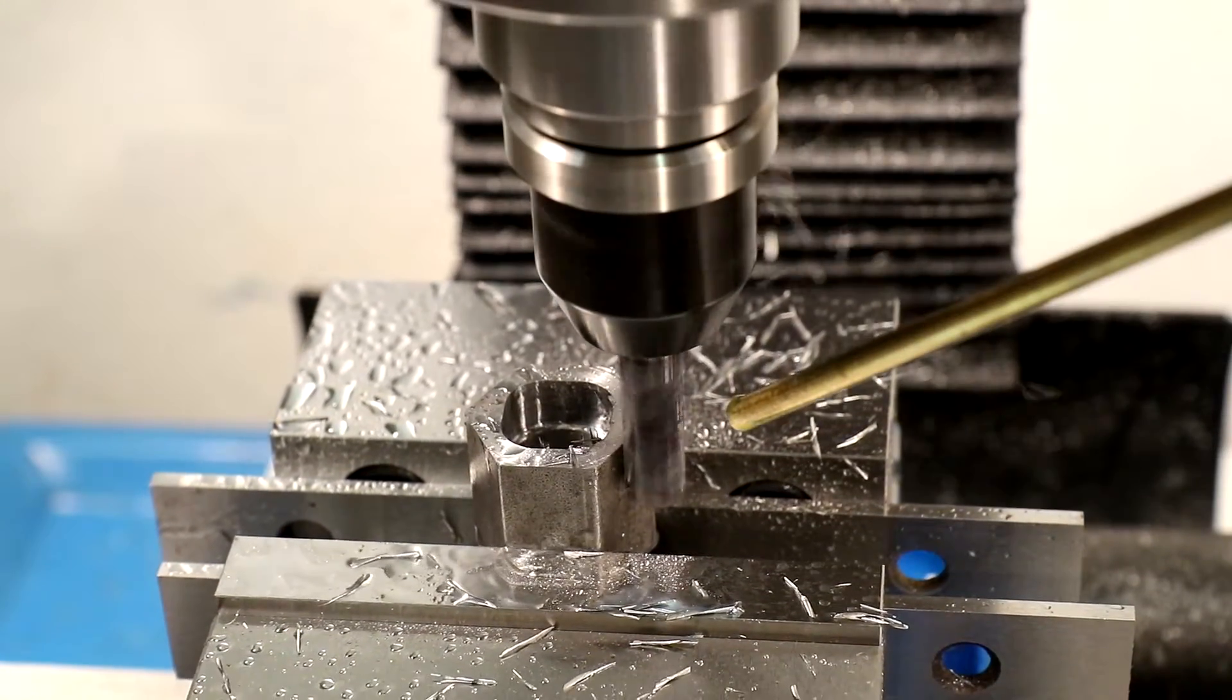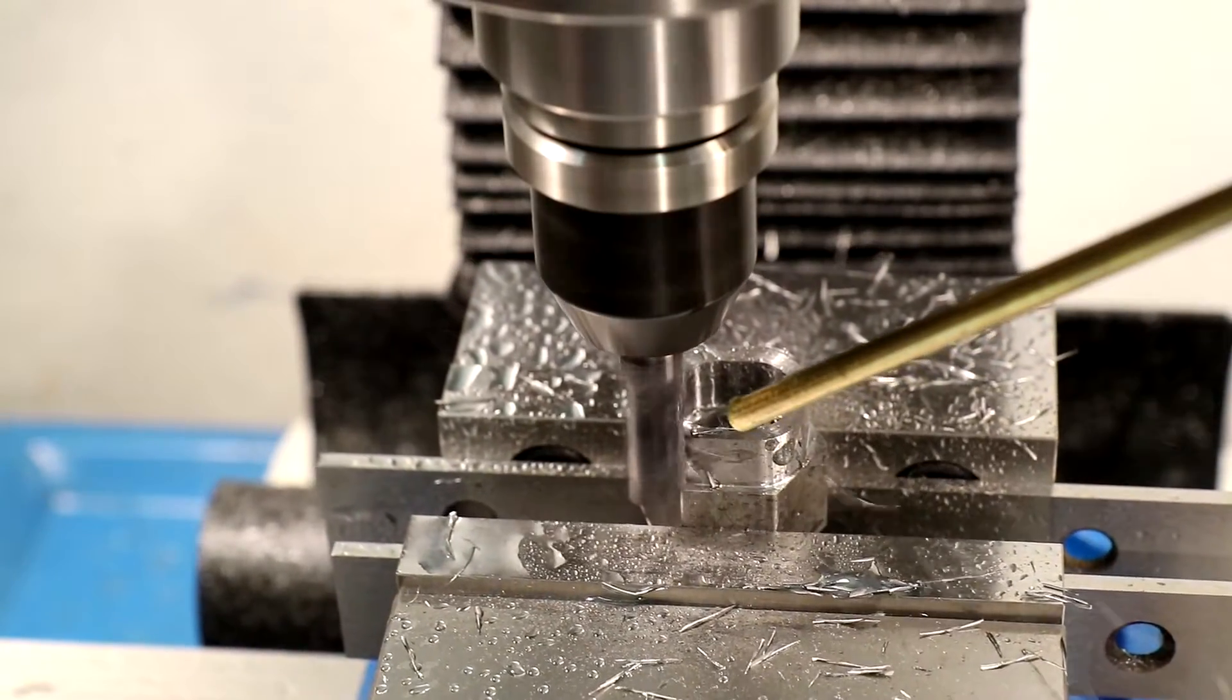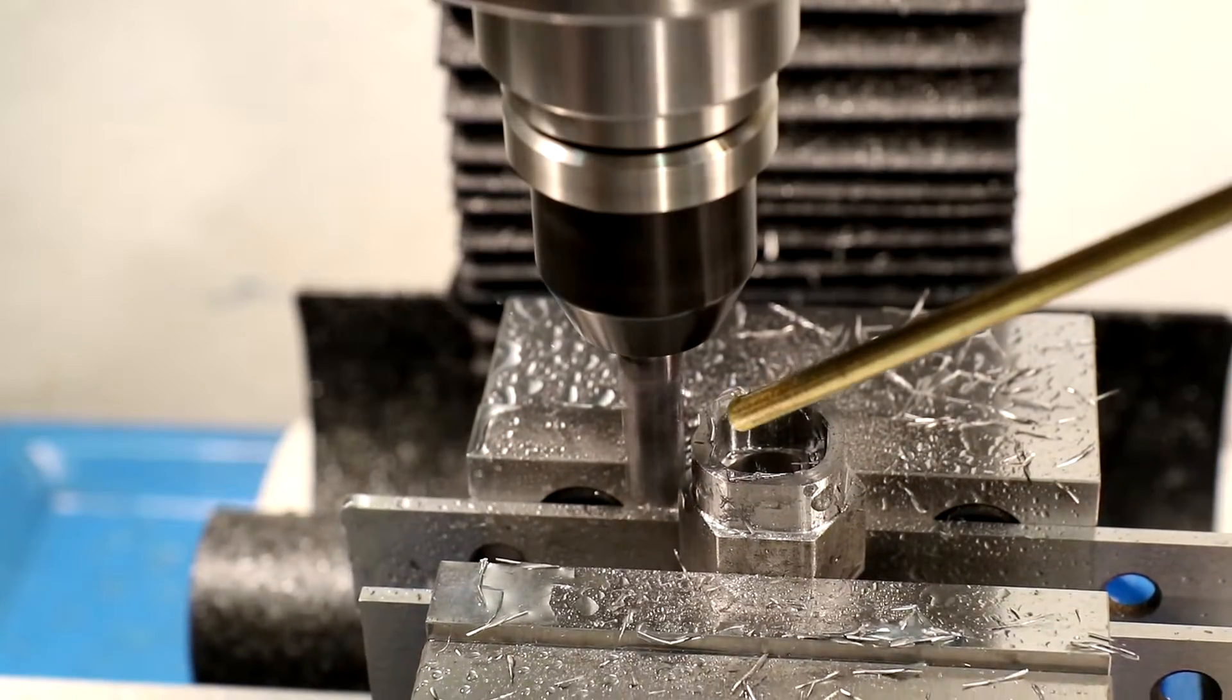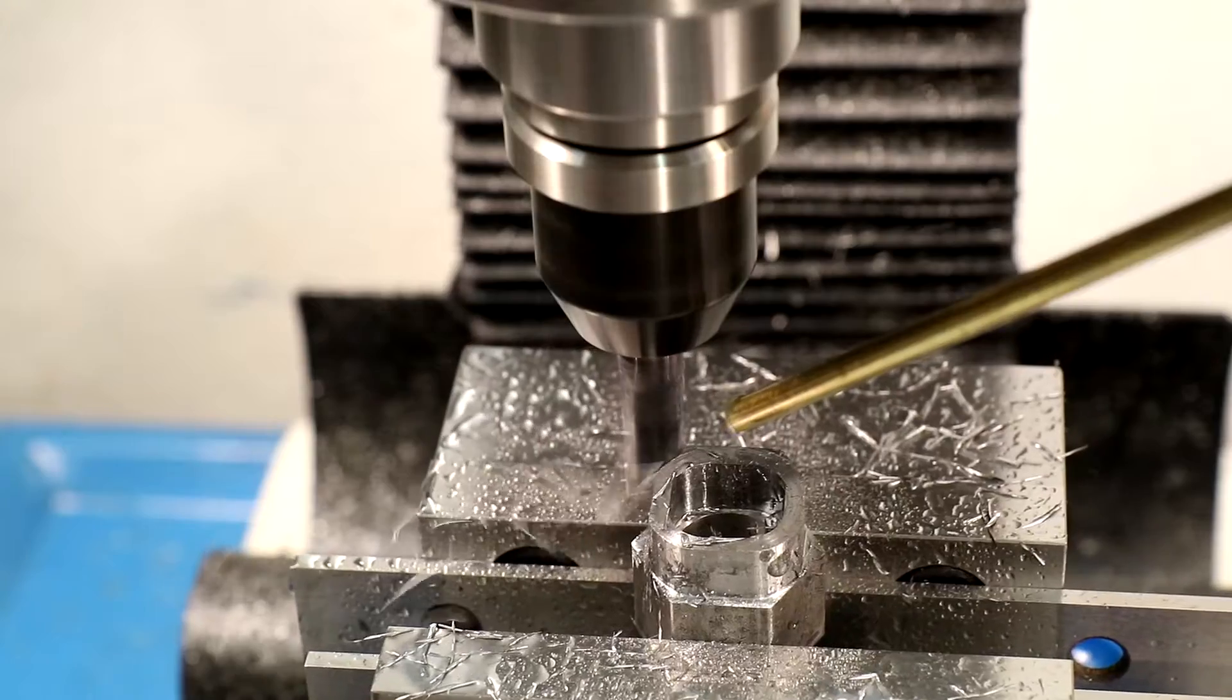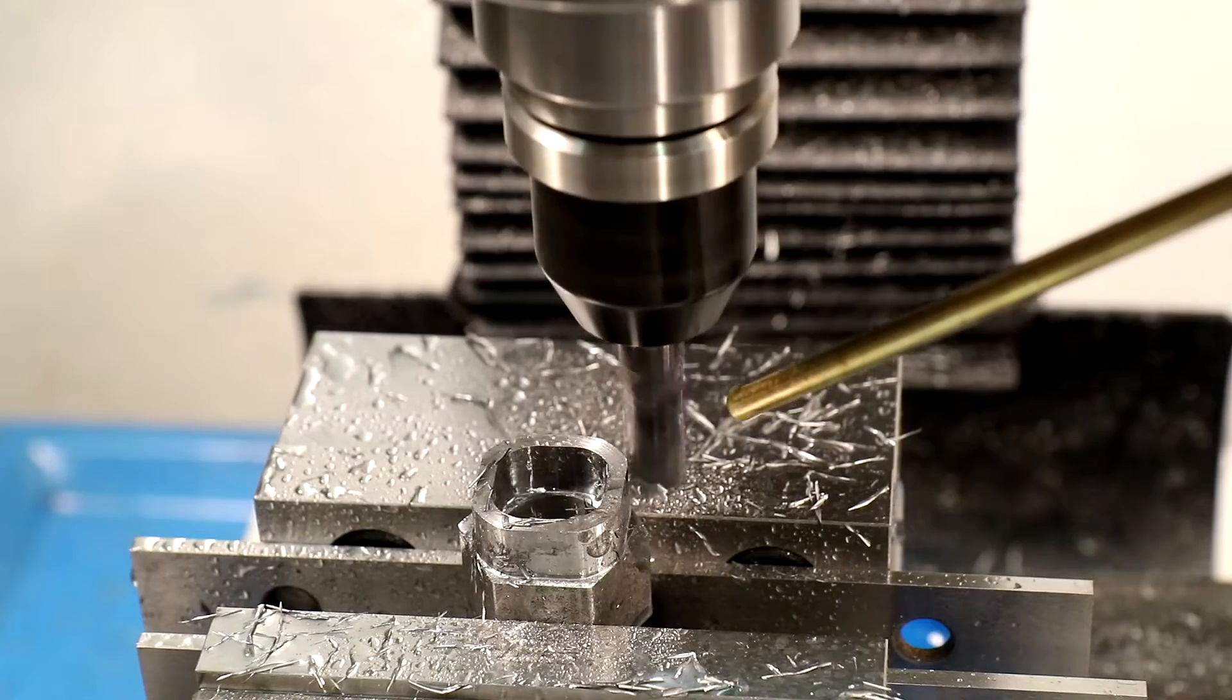This is a continuation of the 3D adaptive clearing operation that created the receiving pocket. Here extra material is being removed to create clearance for the socket into the ball screw support block. Not shown are a couple passes of the same tool following a 2D contour tool path to perform a finishing operation.